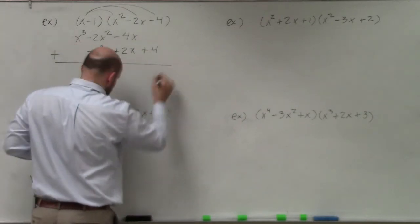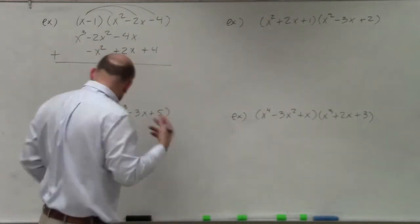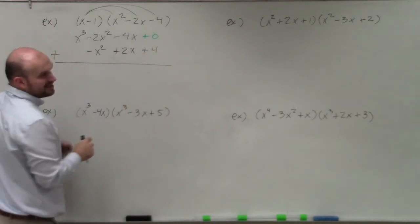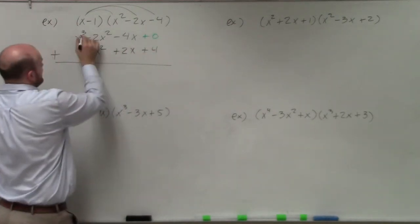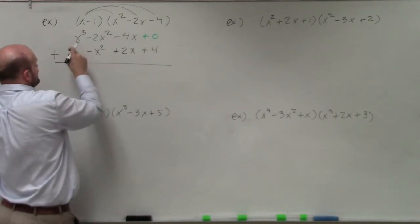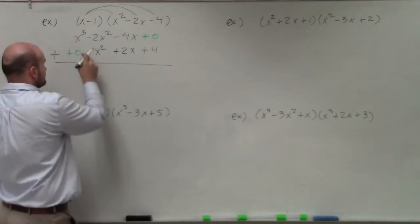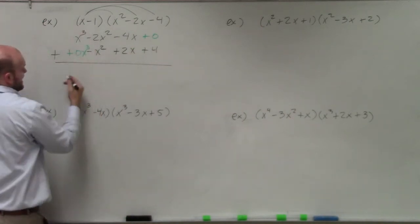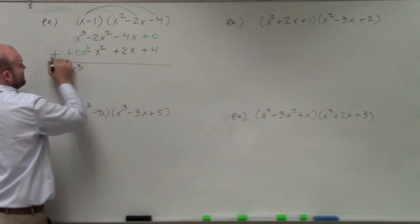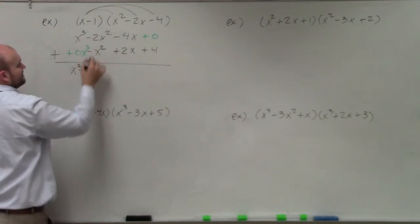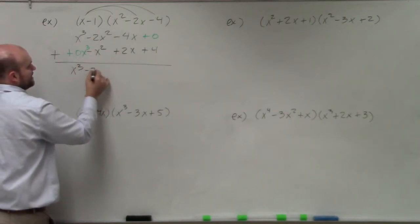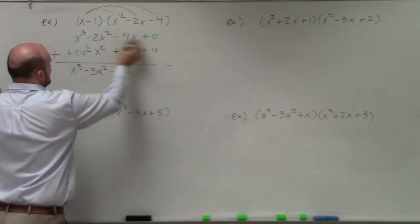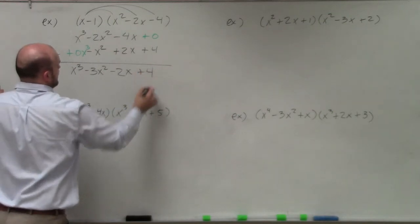Remember we're adding. Thinking of it like place value, I don't have anything to add the 4 to, so think of it as plus 0, and similarly 0x³ for the other column. Adding vertically: x³; then -2x² plus -x² gives -3x²; then -4 plus 2 gives -2x; and 0 plus 4 gives positive 4.